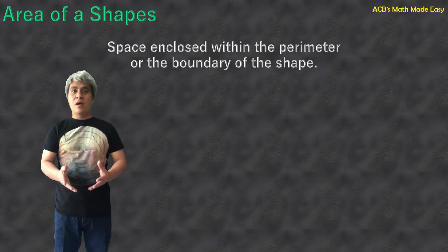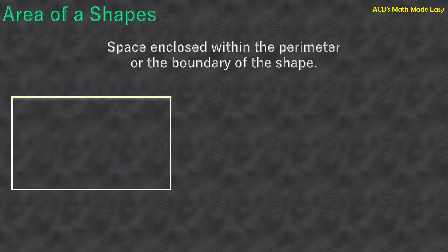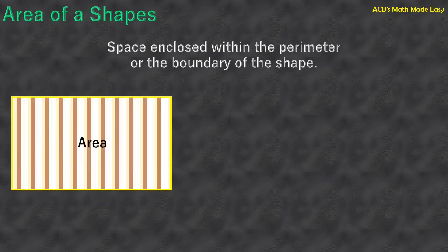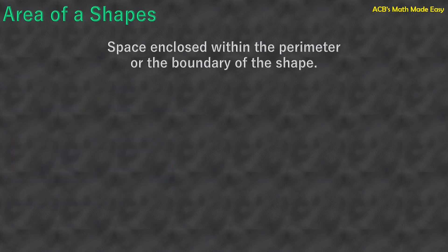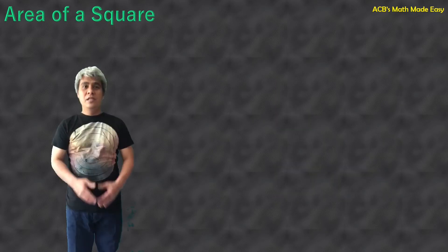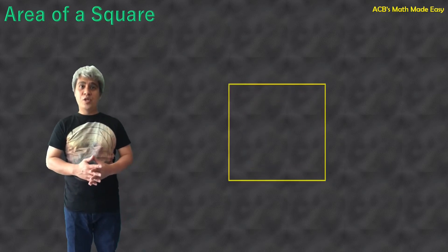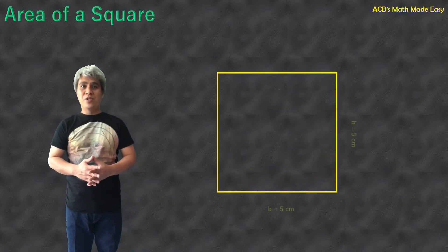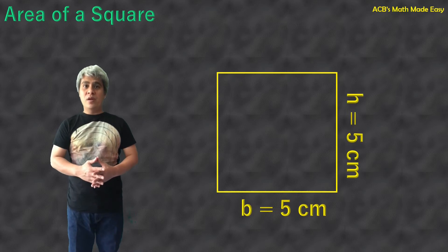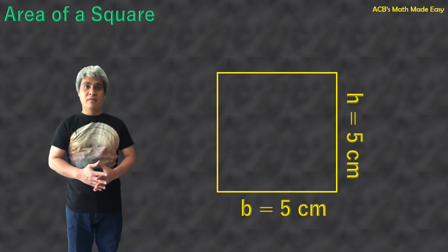This is the area of a square. This is the area of a rectangle. And this is the area of a triangle. Let us find first the area of a square. This is our square, and each side is measured 5 cm. To get the area of a square, just multiply the base and the height.